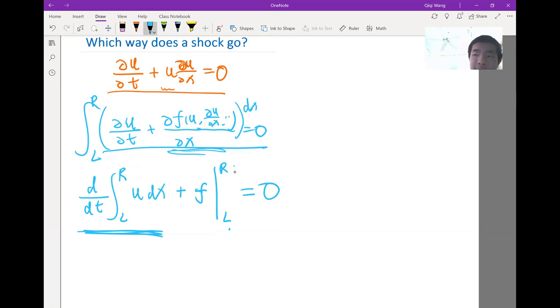So this is a conservation law, right? Whenever you say, how does the total amount of stuff within the volume change? It's actually equal to the flux coming in from the left minus flux coming out from the right. Well, that's a conservation law. We are going to see this not only for this one-dimensional problem, but also for multidimensional problems later on.